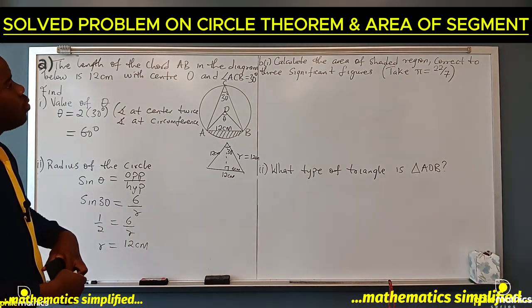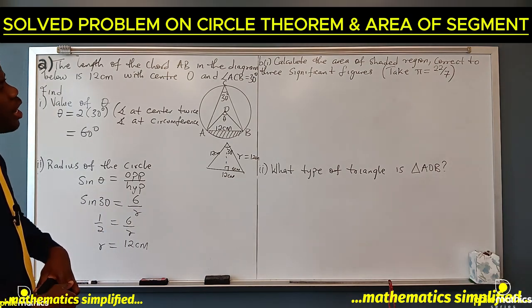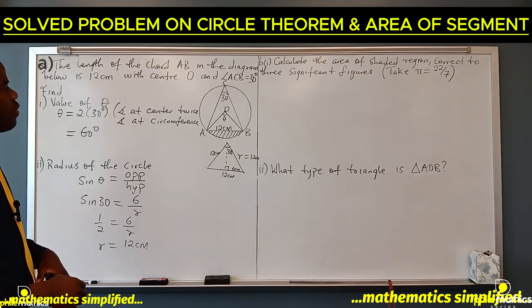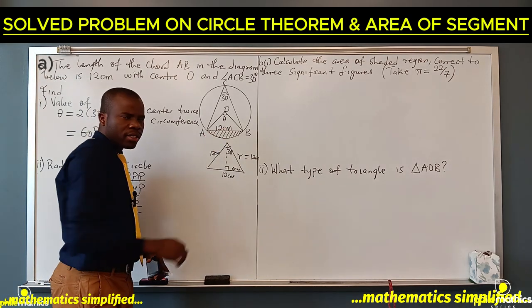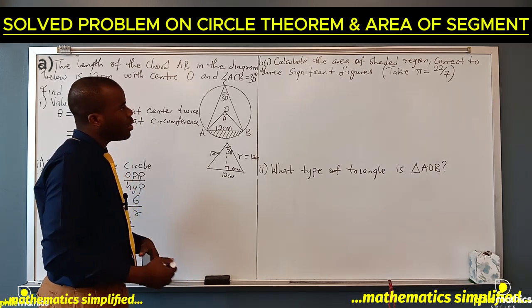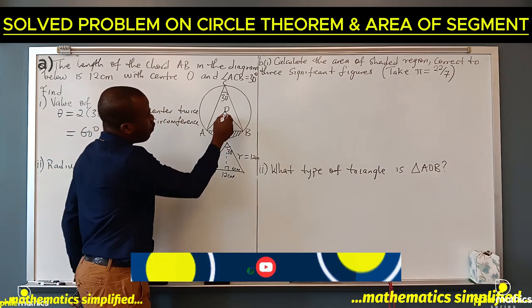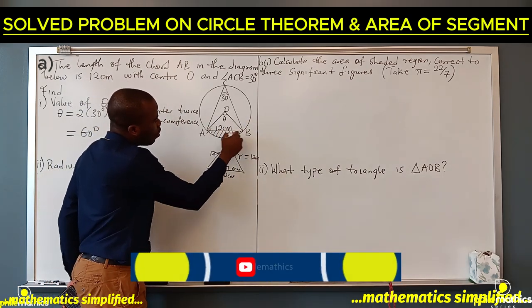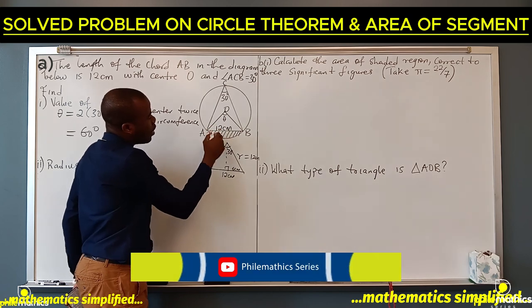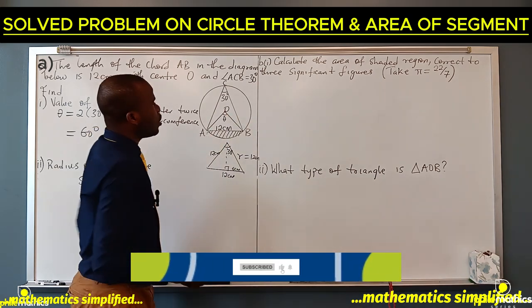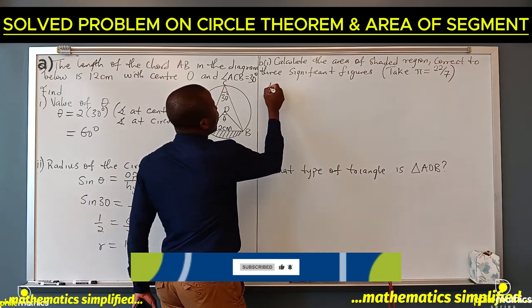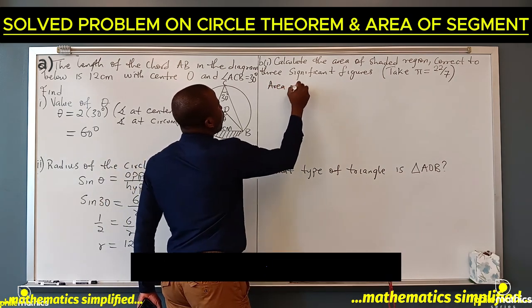The next thing we are asked to look for is calculate the area of the shaded region, correct to three significant figures. The area of the shaded region is a segment, and the formula for segment says area of the sector minus area of the triangle. We have gotten the area of the shaded region.